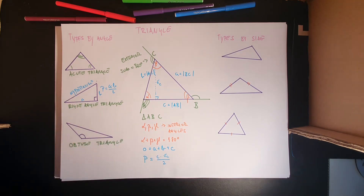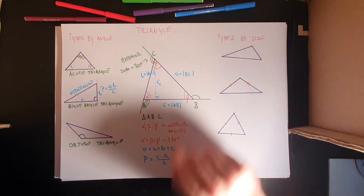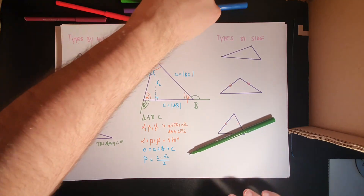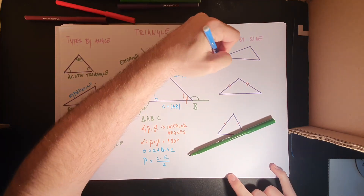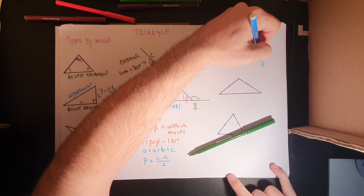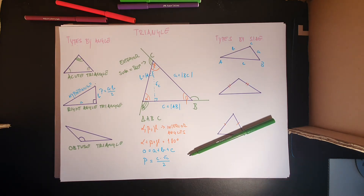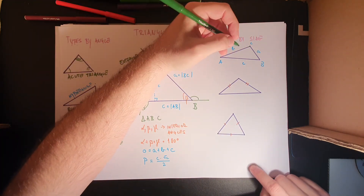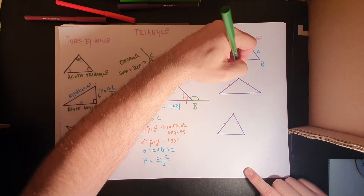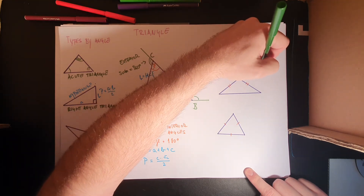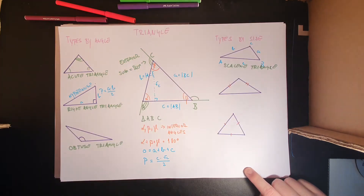Now classifying by sides: the first situation is when all three sides are different lengths — let's say a, b, and c are all different from one another. This triangle is called a scalene triangle.